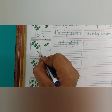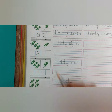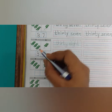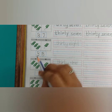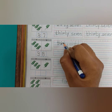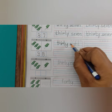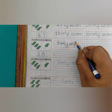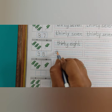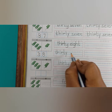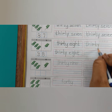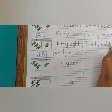अब, यहाँ पे टेंस के 3 ग्रूप है. तो हम यहाँ पे 3 लिखेंगे. और units में हम काउंट करेंगे: 1, 2, 3, 4, 5, 6, 7, 8. तो यहाँ पे units में हम 8 लिखेंगे. 3, 8 — 38. तो यहाँ पे 38 का spelling हम trace करेंगे. T-H-I-R-T-Y-E-I-G-H-T.